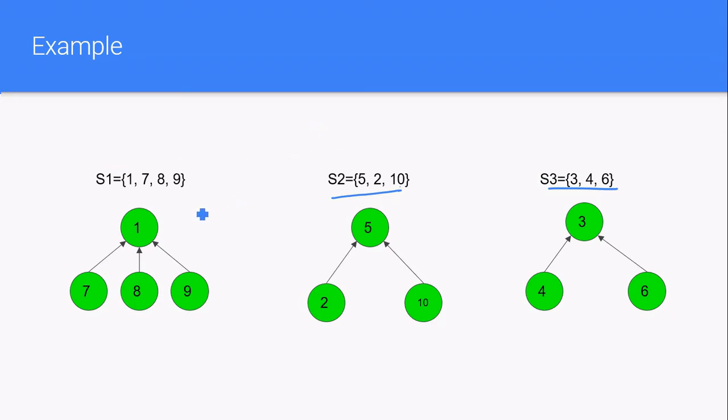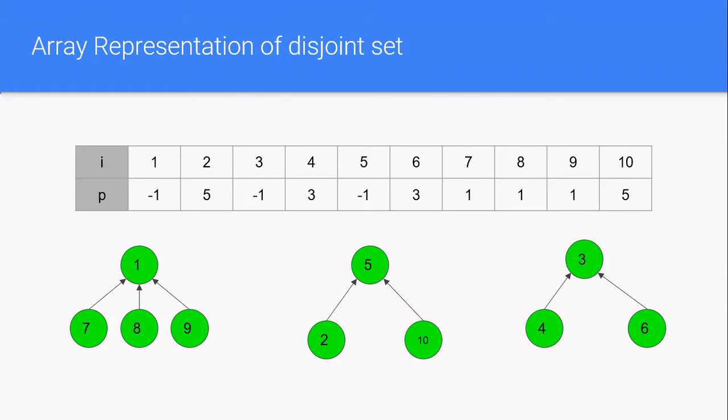And a disjoint set will have a root node and all other nodes will be pointed to the root node. So it can be represented as an array like this. We will have the element i and its parent will be given like this. And if the parent is a root node, we will give the value of parent as minus 1.